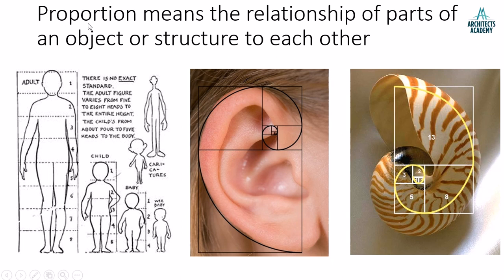Now let us look at proportion. While scale denotes the relationship of one object to another, proportion means the relationship of parts of the same object to each other. For example, in the human figure, the height of the head has a certain relationship to the other parts of the body — the total height of the human being can be divided into eight parts, each part denoting the height of the head. These proportions change in the case of a child or a baby.